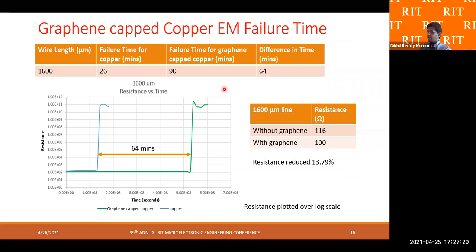Similarly, for the 1600-micron line, the failure time for the graphene-capped wire was 90 minutes, compared to a failure time of 26 minutes for the copper-only 1600-micron line. The resistance also decreased from 116 ohms before the graphene transfer to 100 ohms after — a resistance reduction of approximately 13.79% for this line as well.